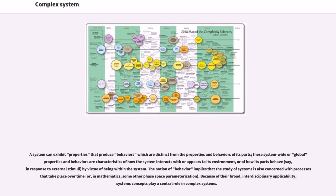A system can exhibit properties that produce behaviors which are distinct from the properties and behaviors of its parts. These system-wide or global properties and behaviors are characteristics of how the system interacts with or appears to its environment, or of how its parts behave, say, in response to external stimuli, by virtue of being within the system. The notion of behavior implies that the study of systems is also concerned with processes that take place over time, or, in mathematics, some other phase space parameterization.